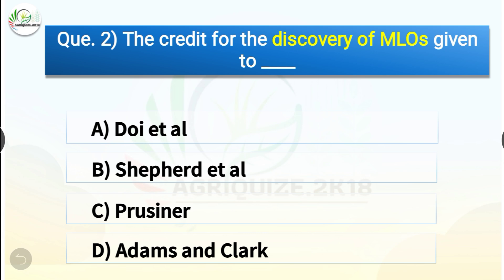Question number two: The credit for the discovery of MLOs was given to whom? The options are Doy et al., Shefford et al., Prisoner, or Adams and Clark. The correct answer is option A, Doy et al. In 1967, using electron microscopy, Doy et al. first described the consistent presence of small pleomorphic bodies 80 to 800 nanometers in diameter resembling mycoplasmas.